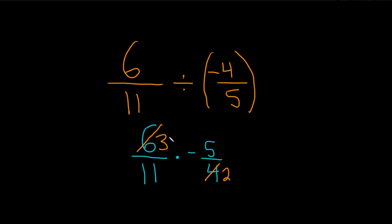And now we multiply straight across. So 3 times 5 is equal to 15 over, and then 11 times 2 is equal to 22. And then one of the numbers is negative, so the answer is actually negative. I'll just squeeze the negative in up there.